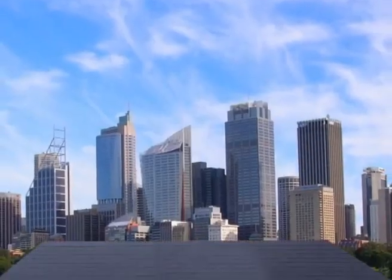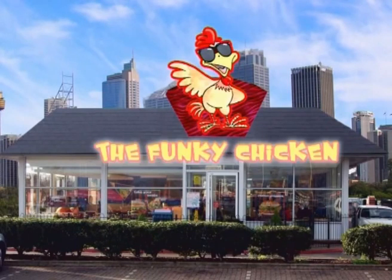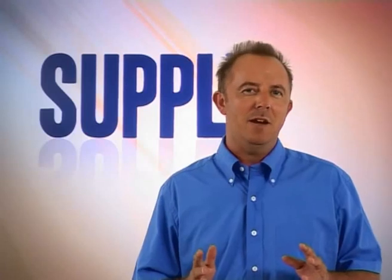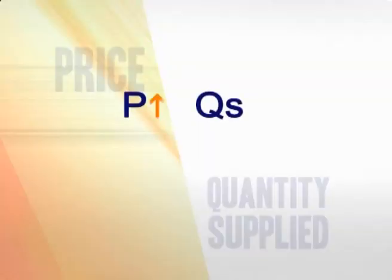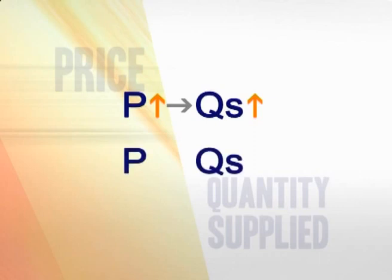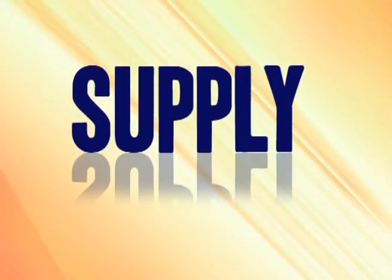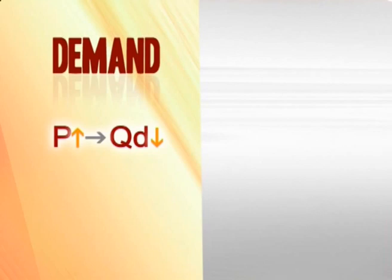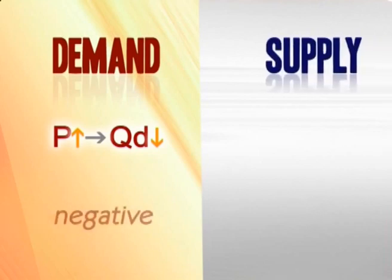I've decided to call my business the Funky Chicken. One of the factors when deciding how much to supply will be the price — in other words, how much you can get for a piece of chicken. Would a higher price cause you to supply a higher or lower quantity? The higher the price, the more profits I'll make, and that will push me to sell more. So if we denote quantity supplied as Qs, we can say that as price P increases, Qs increases, and vice versa.